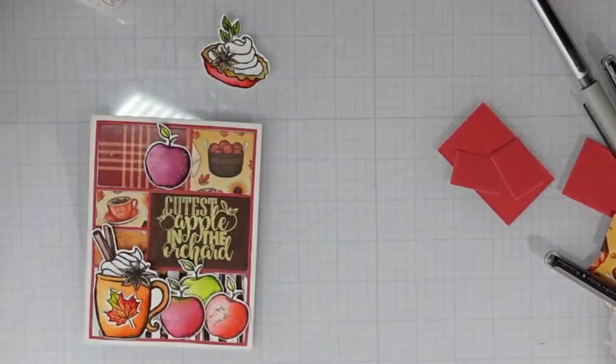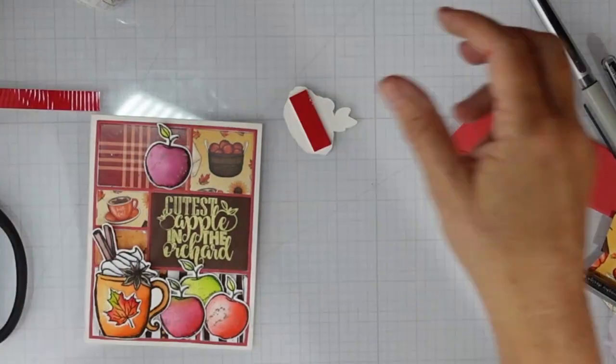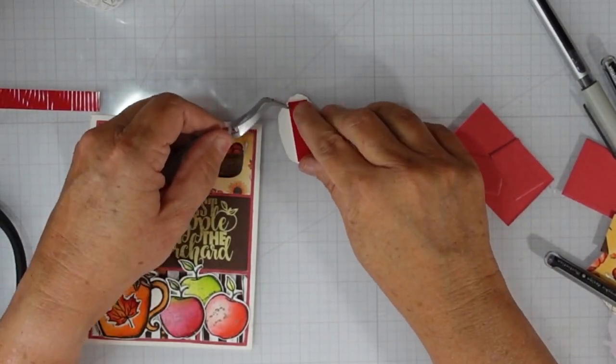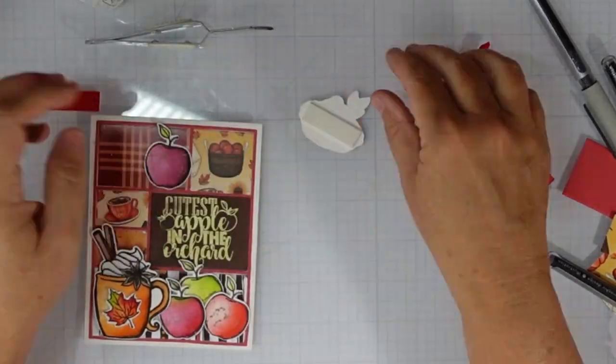But then to add that dimension and to add a little bit more interest to the card, I'm going to add that foam tape to the back of this apple pie.